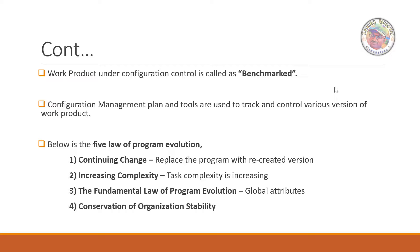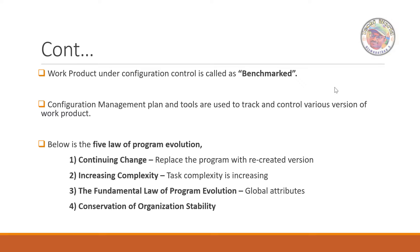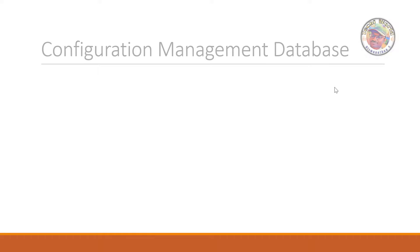These are also parts of organization stability. In this law, we have certain criteria and categories. Next is conservation of familiarity — familiarity means your product will be reached every time. So the five laws are: continuing change, increasing complexity, fundamental law of program evaluation, conservation of organization stability, and conservation of familiarity.